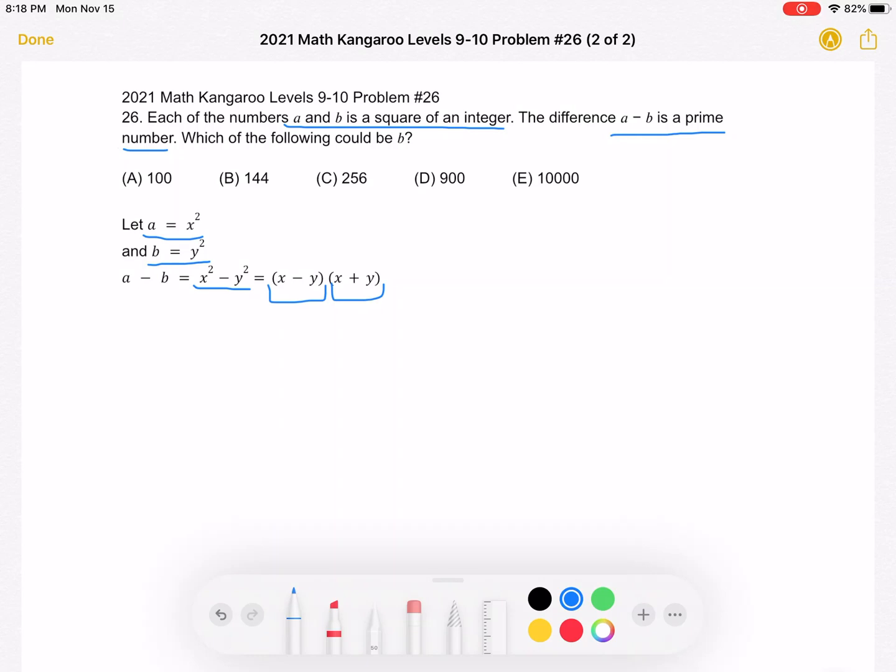Well, what do we know about prime numbers? The factors of a prime number are 1 and itself. So one of these two quantities is 1 and the other is another prime number.